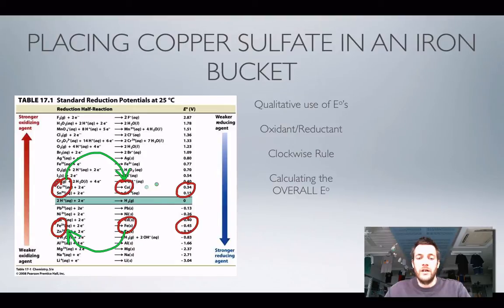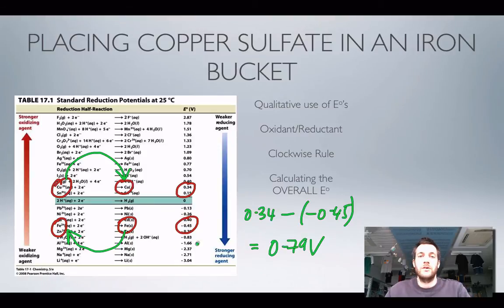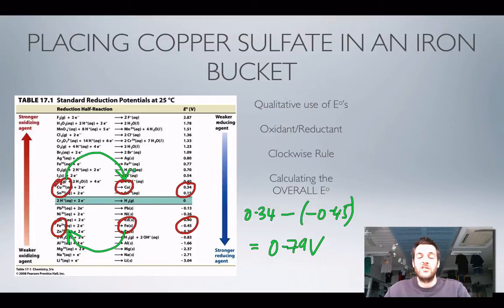Calculating: the reduction potential is 0.34 V minus −0.45 V, which equals +0.79 V — a positive number, so yes, this reaction is feasible. What will we see? This blue solution will turn pale green whilst the silvery grey solid dissolves to form a green solution. A salmon pink solid forms on the surface of the iron. If you ever do this reaction it doesn't look salmon pink — it looks brown or sometimes even black — but because copper is described as salmon pink on the data sheet, you describe it that way.